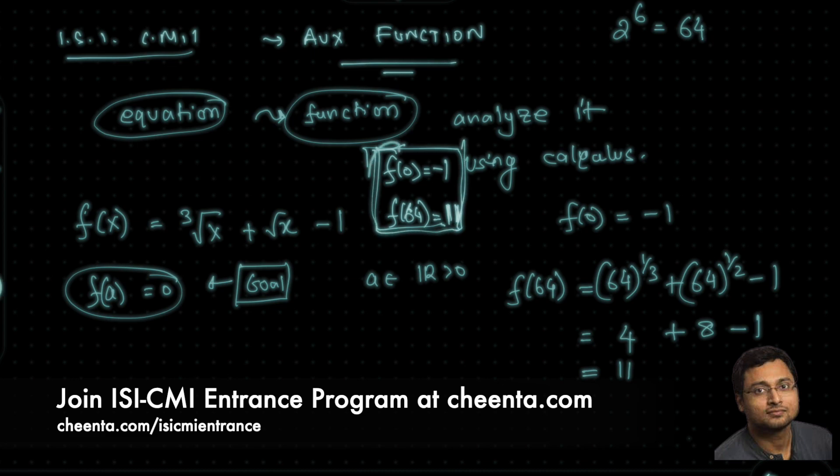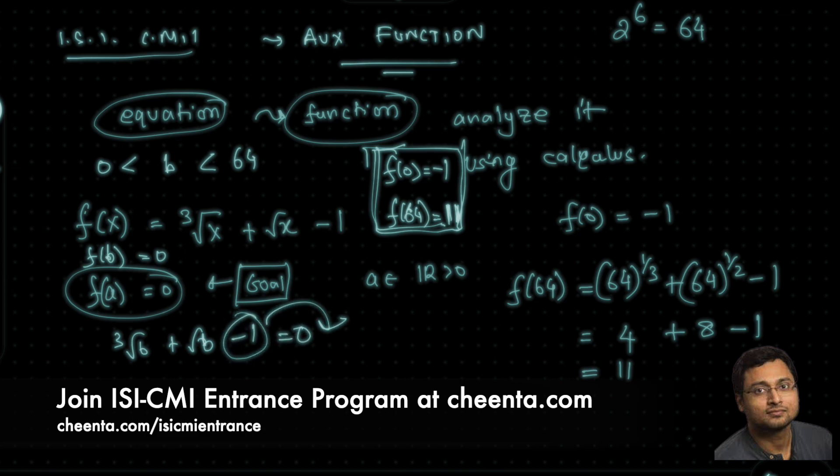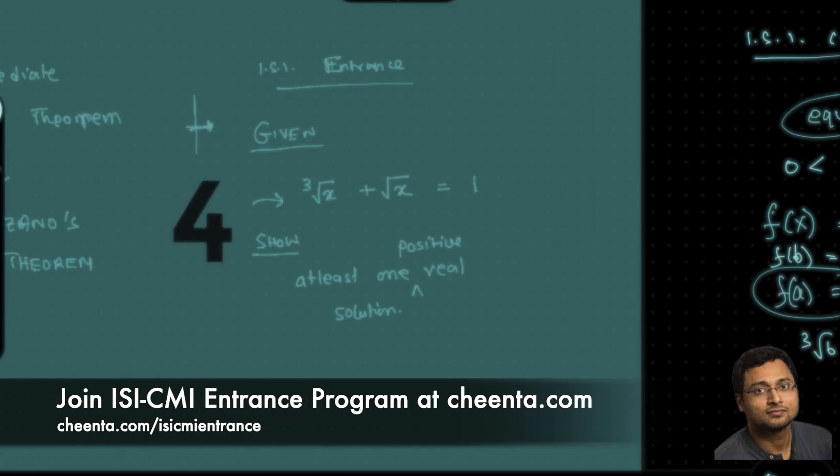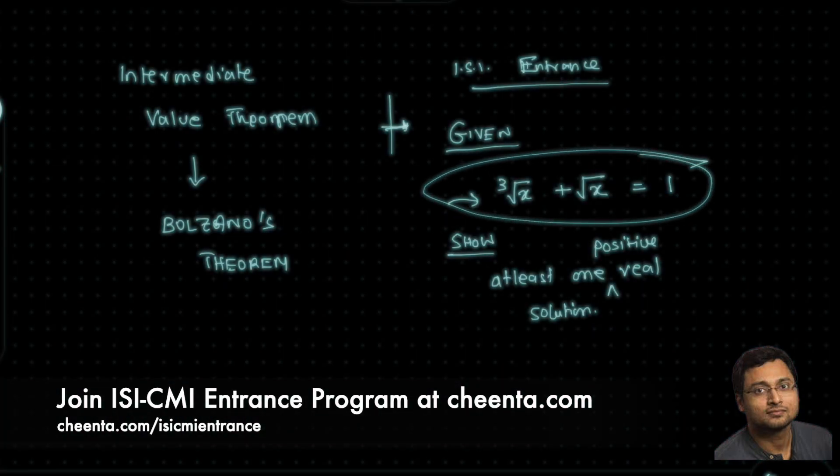So we can use Bolzano's theorem here and say that there is a root of this function f. There is some value of x in between 0 and 64 that makes this 0. There is some number between 0 and 64, let's call it b, such that f(b) is equal to 0. Which means cube root of b plus square root of b minus 1 equal to 0. Or you can take this to the other side and you get the original equation back.